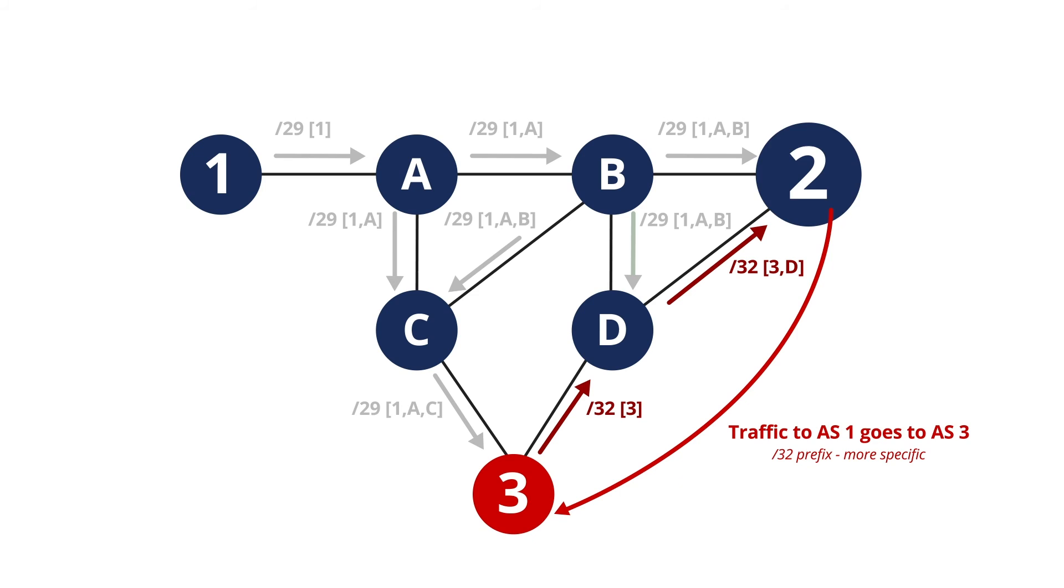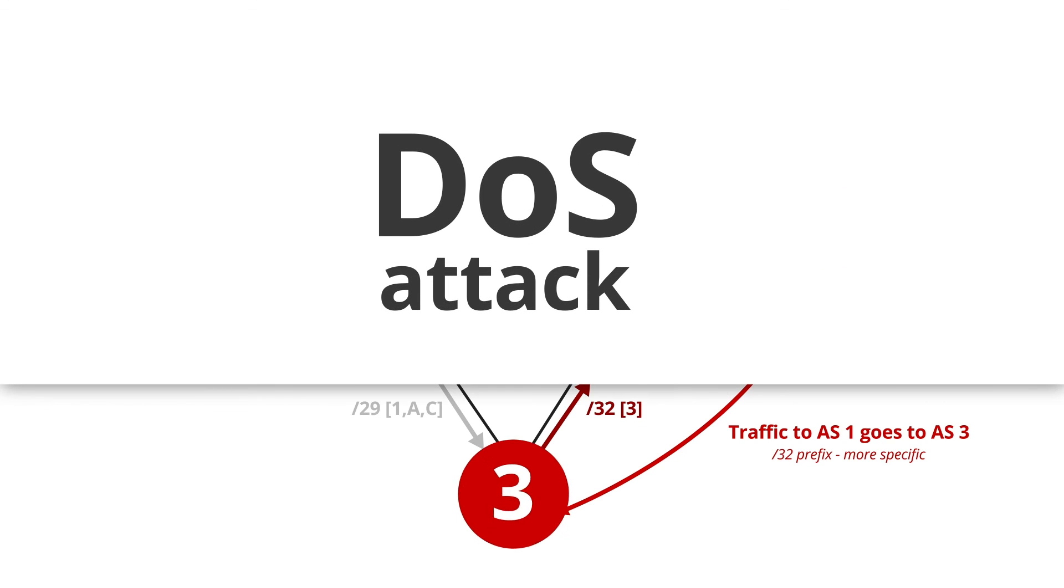If hosts in AS2 send traffic to any address within the more specific slash 32 prefix announced by the attacker, the packets will go to AS3 through ASD. This will result in a denial-of-service attack, as traffic will just sync in AS3.